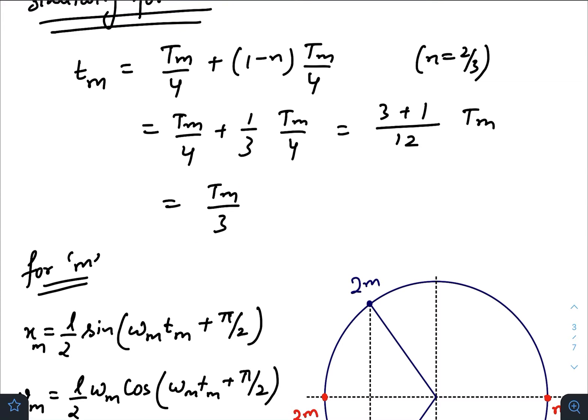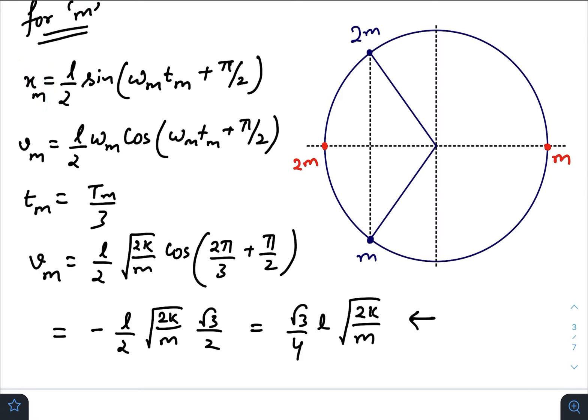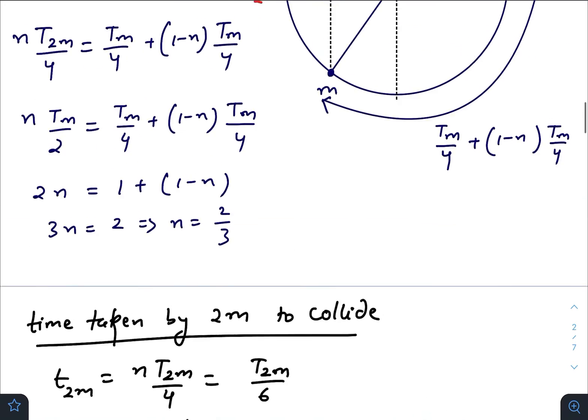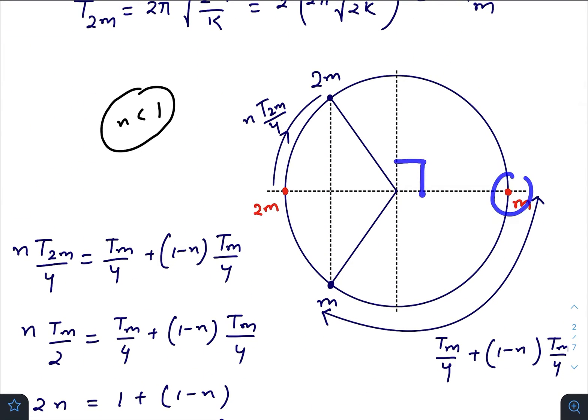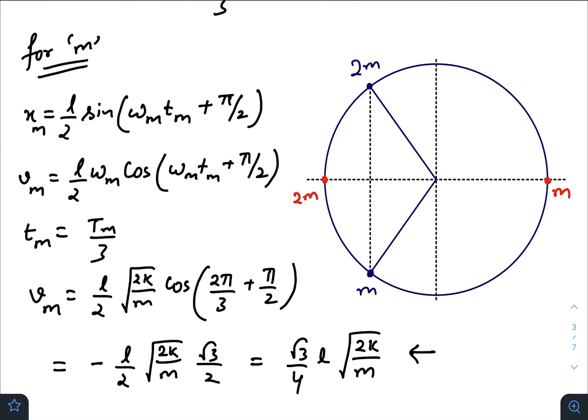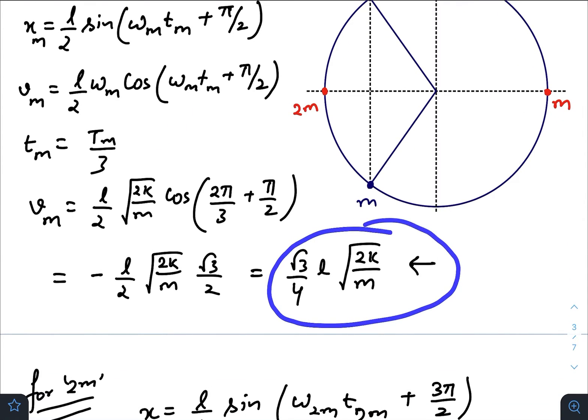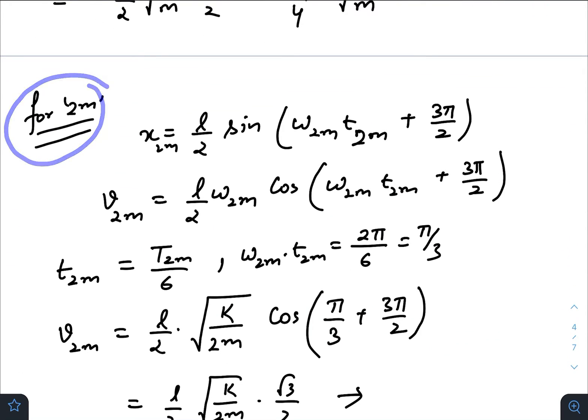The position of mass m varies as x_m = A sin(ω_m t + φ). Since m lies at the quarter-point of the phasor diagram, there is an additional phase constant of π/2. Differentiating with respect to time gives the velocity. At the time of collision — when t = T_m/3 — substituting this value gives the velocity just before collision, and the direction is towards the left because a negative sign appears.